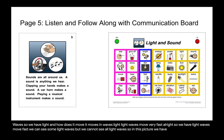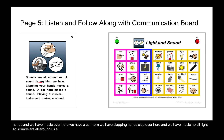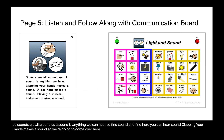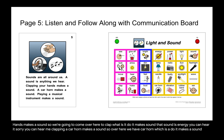In this picture we have a horn, clapping hands, and music. We have a car horn, we have clapping hands — clap over here — and we have music. Sounds are all around us. A sound is anything we can hear — find sound and find hear. Clapping your hands makes a sound — over here, clap, what does it do? It makes sound. That sound is energy. A car horn makes a sound — over here we have car horn. It makes a sound, which is energy.